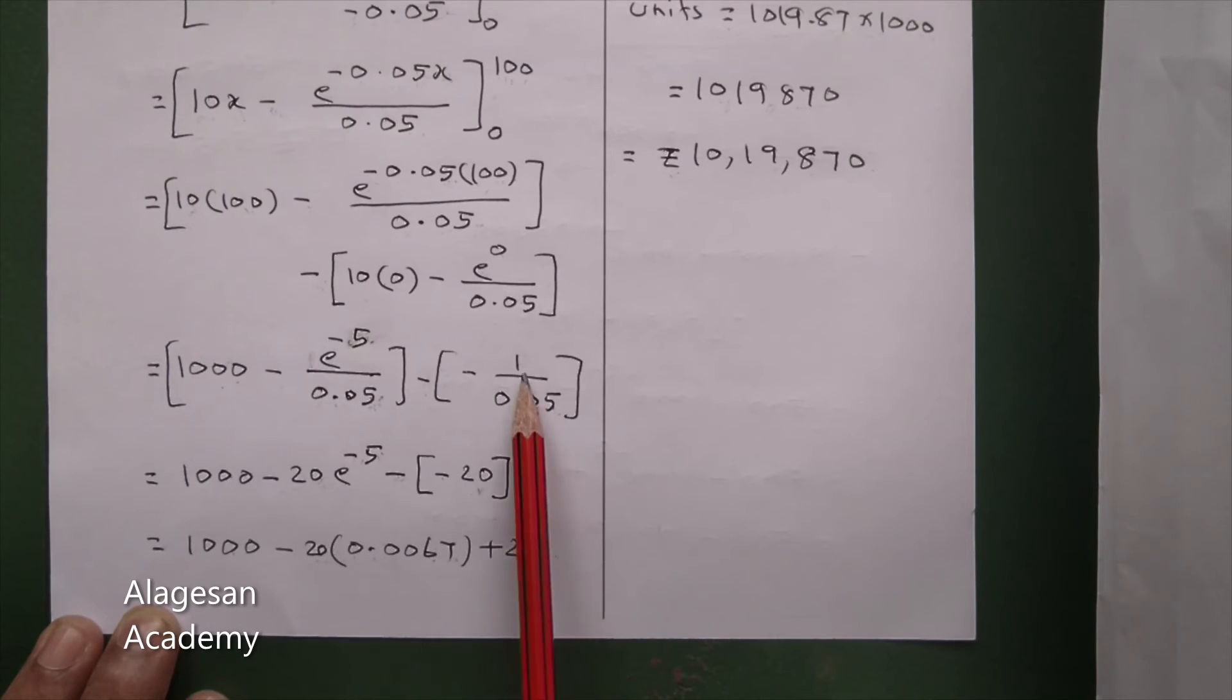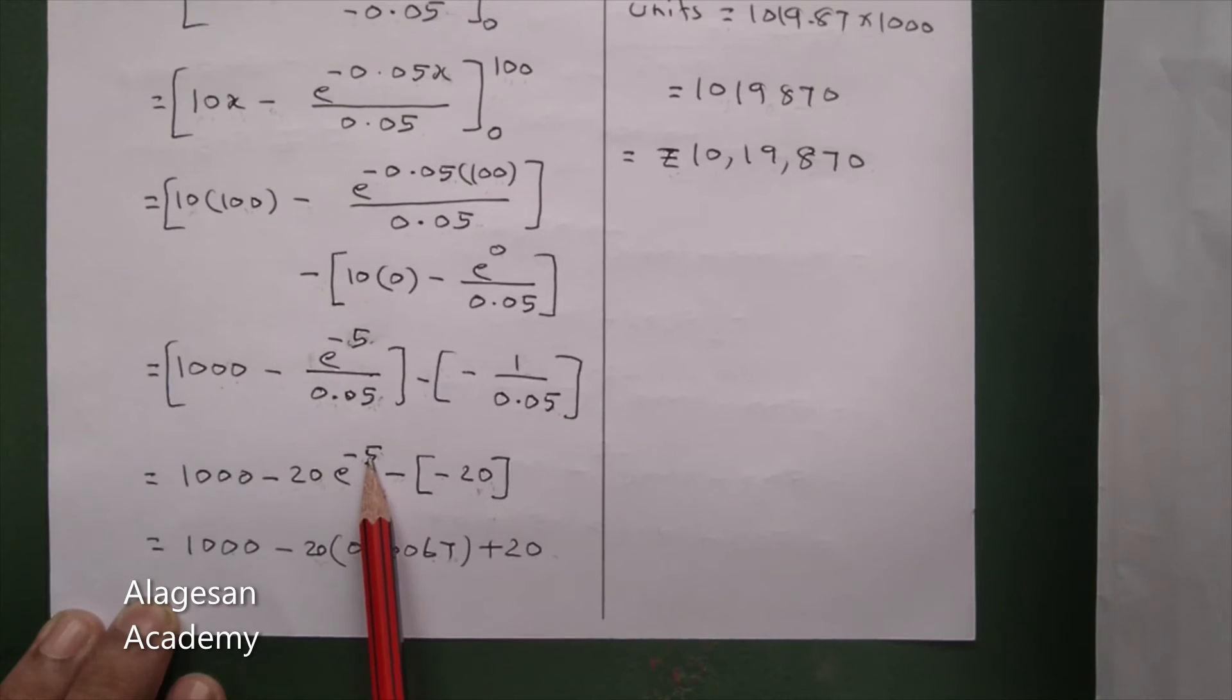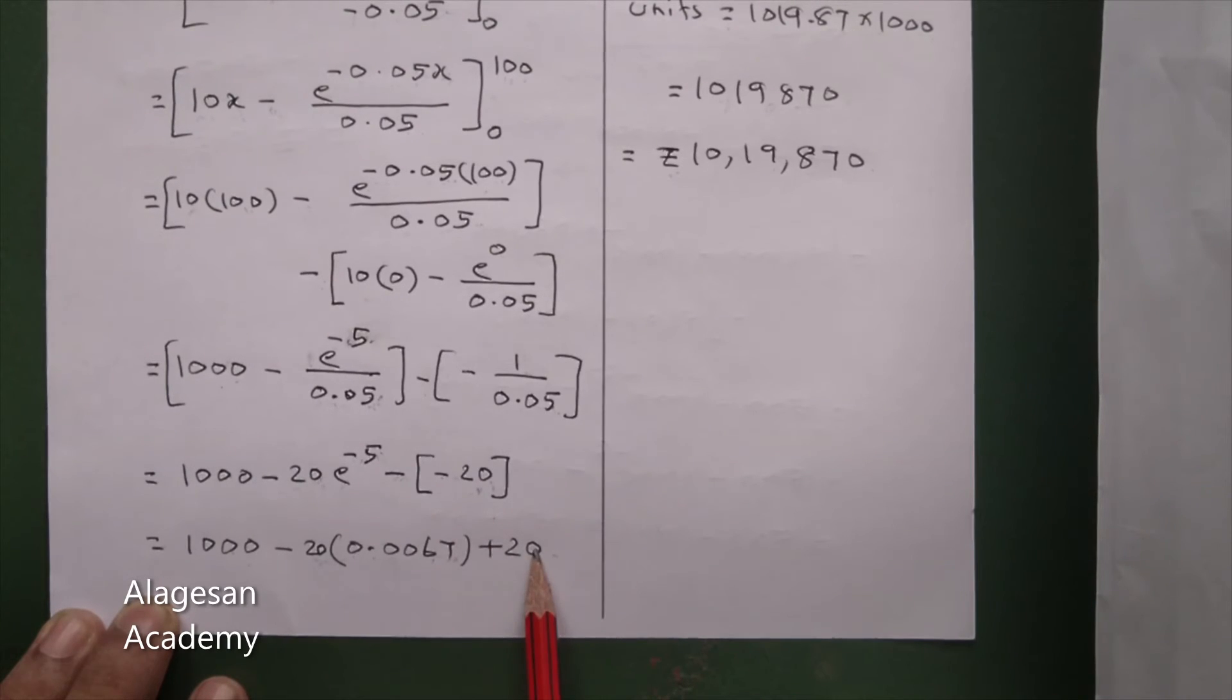E power minus 5 minus 1 by 0.05 minus 20, so minus 20. Next, 1000 minus 20 into e power minus 5. The question uses the value 0.0067, so minus minus becomes plus 20.